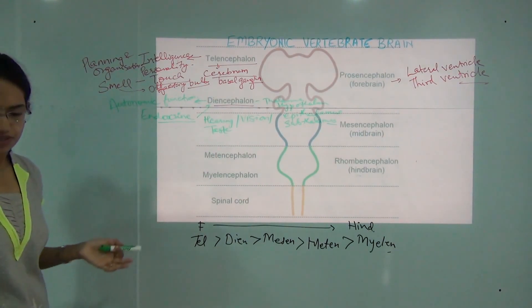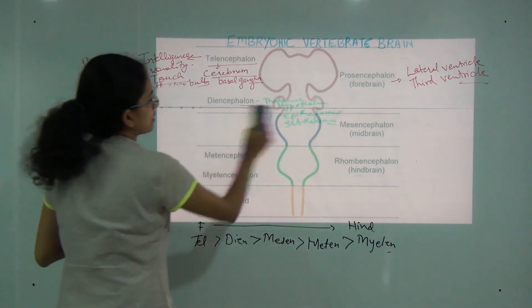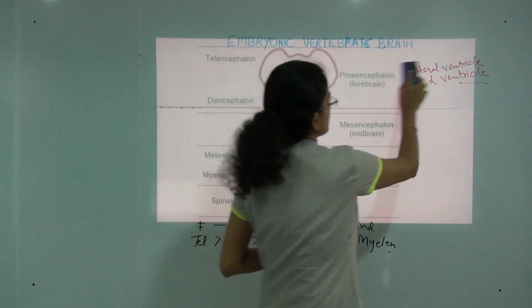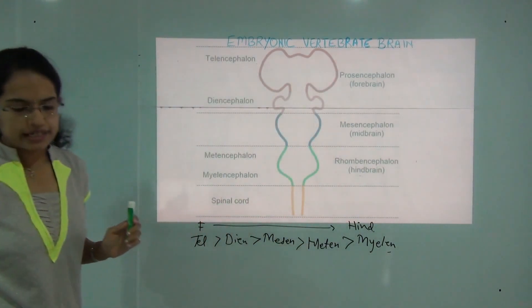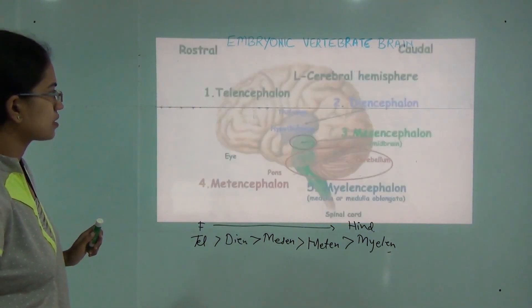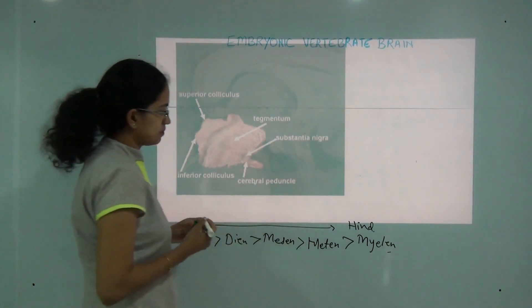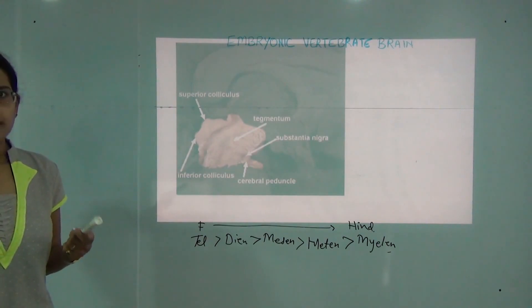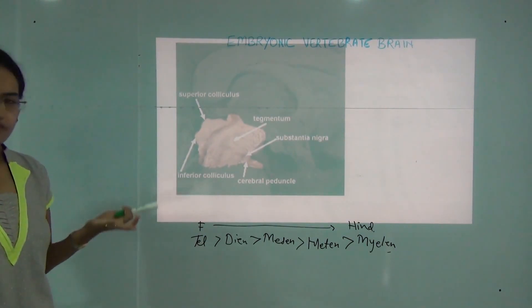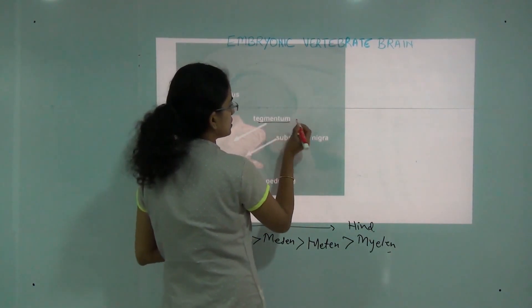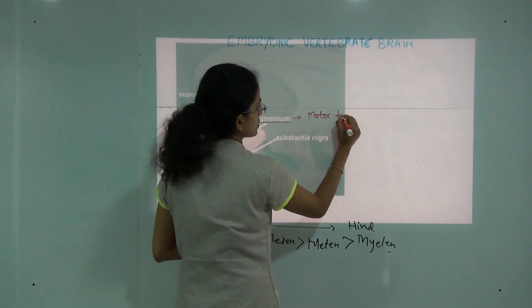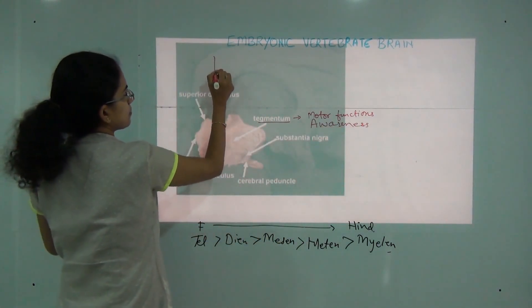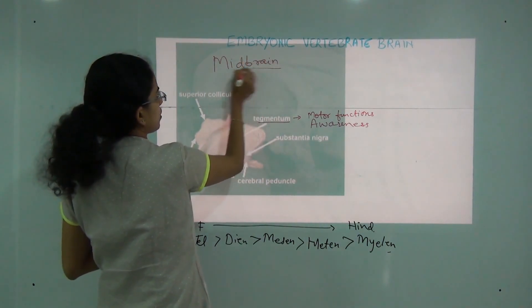Next we will be talking about mesencephalon. Mesencephalon, or the midbrain, is divided into four major parts: tegmentum, tectum, substantia nigra, and cerebral peduncle. Tegmentum deals with motor functions, awareness, and also regulates some autonomic functions. Tectum is classified into two parts — the superior colliculus and the inferior colliculus — focusing on auditory and visual responses. The superior colliculus handles visual responses, while the inferior colliculus handles auditory or hearing responses.